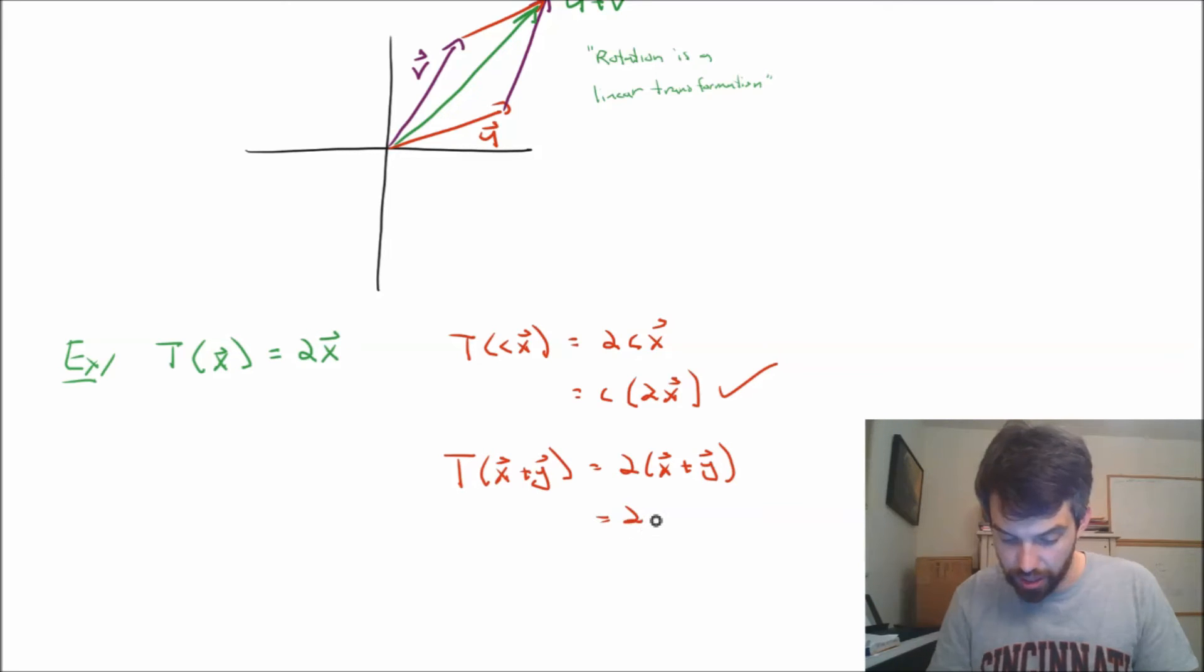So this is going to be just the same thing as 2x plus 2y. And these things are precisely T of x plus T of y.